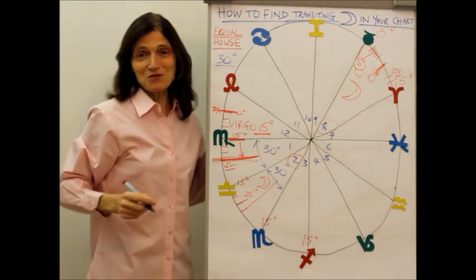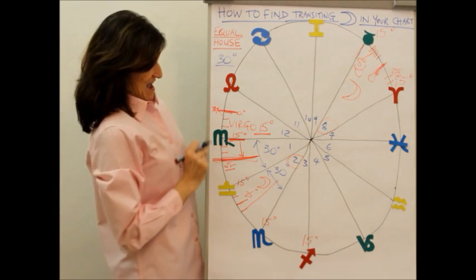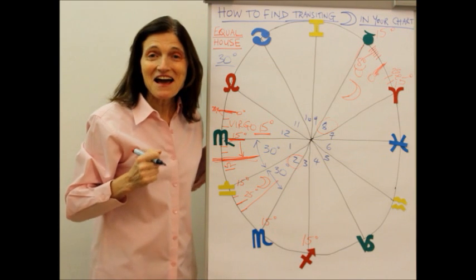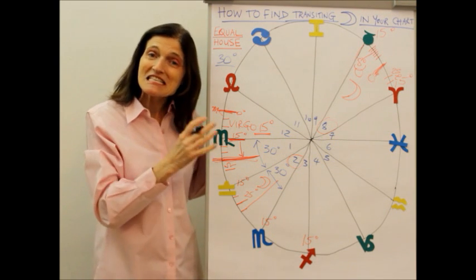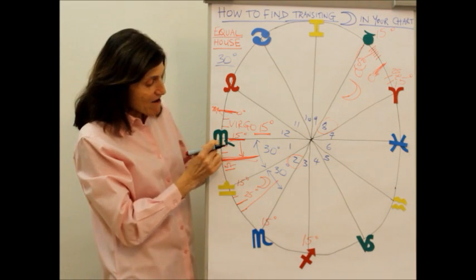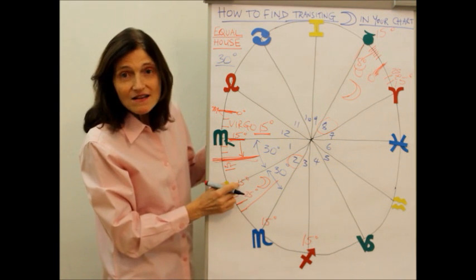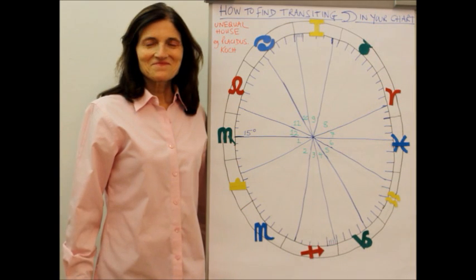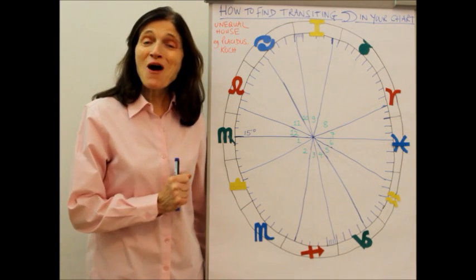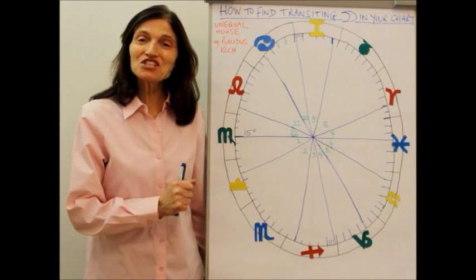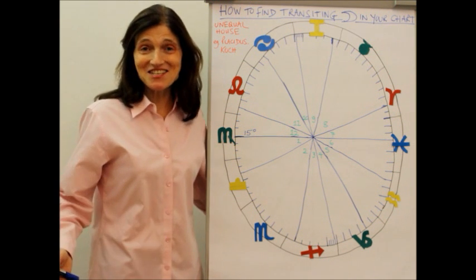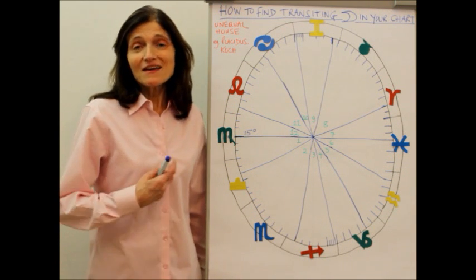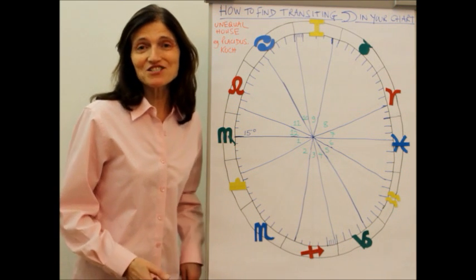So that would be the eighth house. I hope that makes sense because I'm coming on to something a little more complicated after this. So this is the equal house system where everything is equal—each degree of the house is the same degree. Now on to part two of this video, which is showing you the Placidus system, which is used by about 80-85 percent of astrologers in my experience.